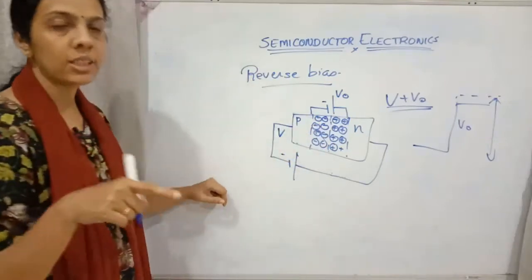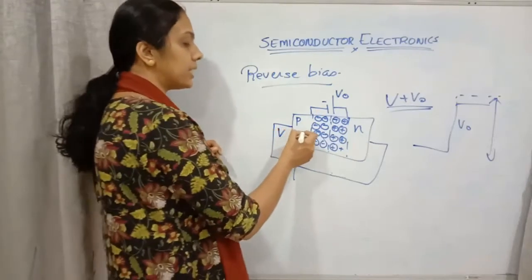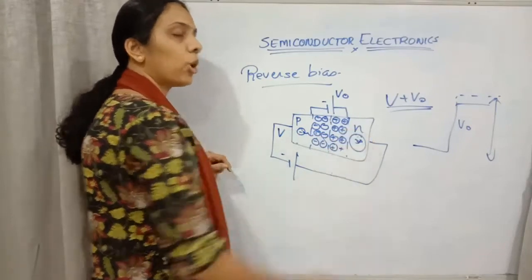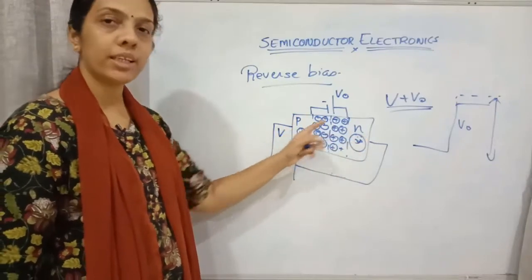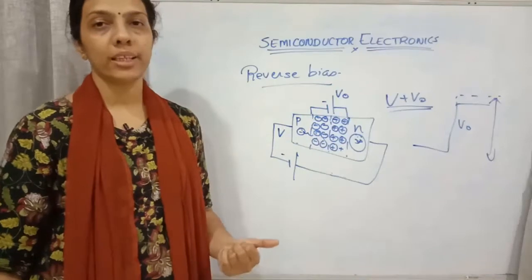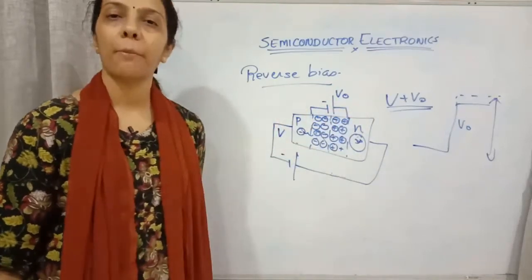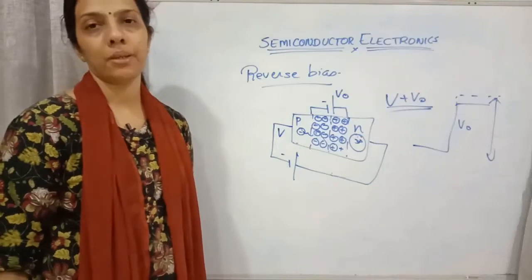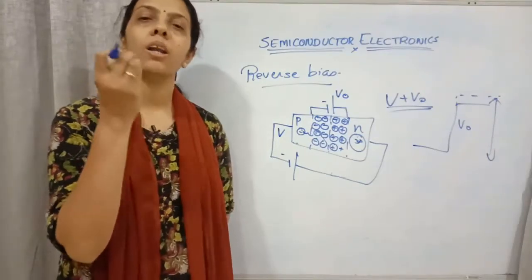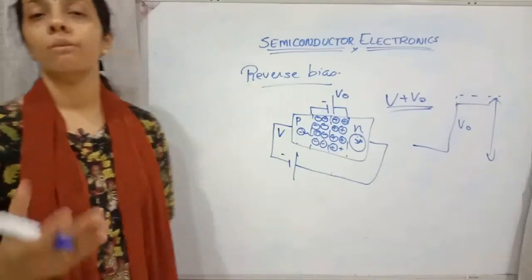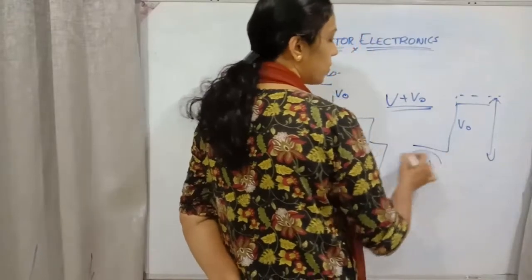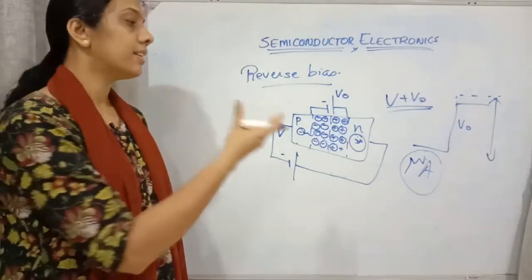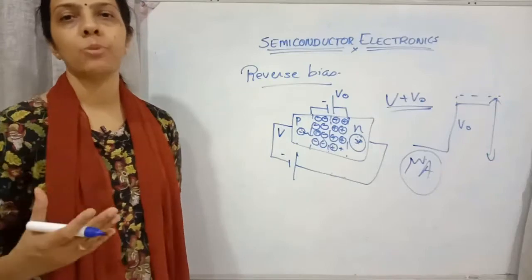In the P-region there will be minority carriers — minority electrons — which will be moving towards the N-region, where they are majority carriers. Similarly, holes will be moving towards the P-region. Because of these minority carriers, a very small amount of current will be produced, which can be measured in microamps. This current due to the movement of minority carriers is called the minority carrier current.